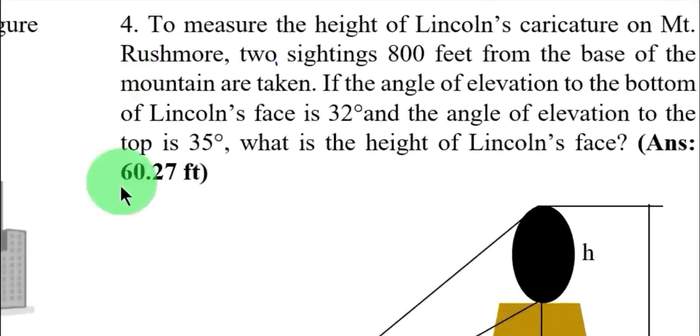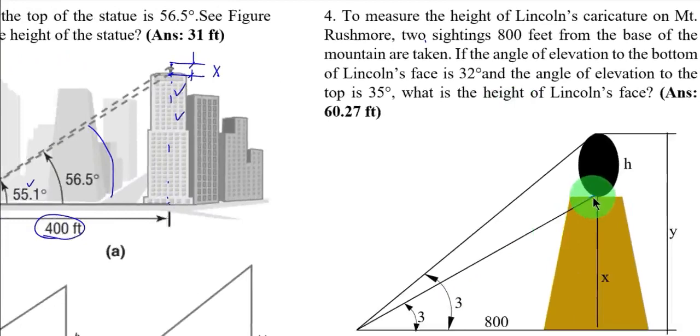Next example, number four. To measure the height of Lincoln's caricature on Mount Rushmore, two sightings 800 feet from the base of the mountain are taken. Again, so if this is your mountain and this is your point of observation, this is 800 feet. If the angle of elevation to the bottom, the Lincoln's face is 32 degrees. Again, the angle of elevation at the bottom. So if this is your bottom and this is your point of observation, so therefore,